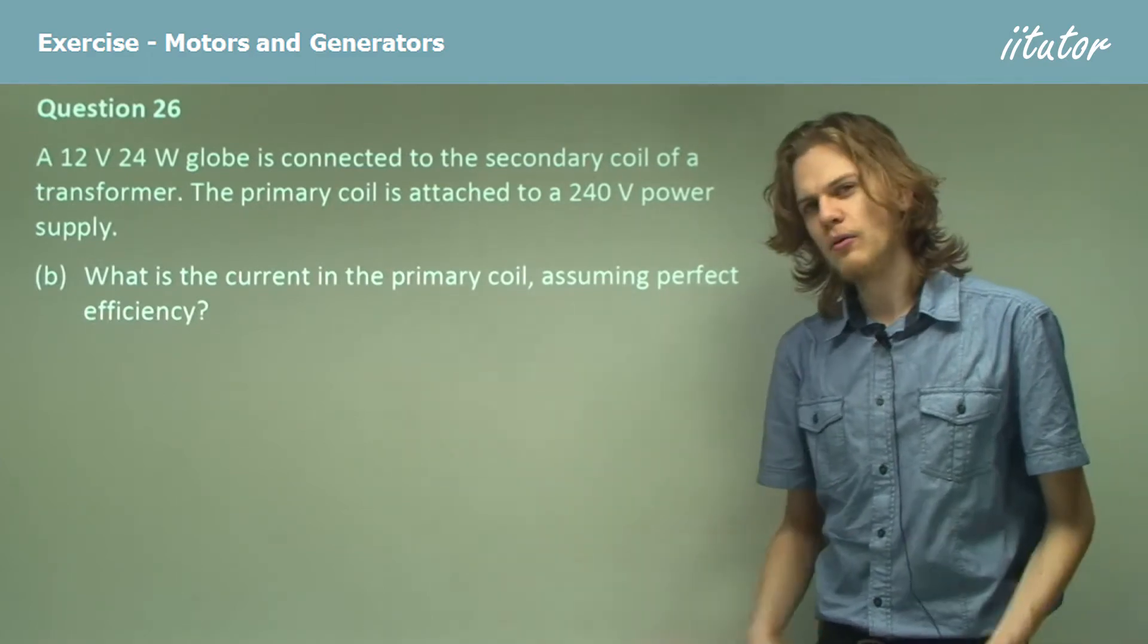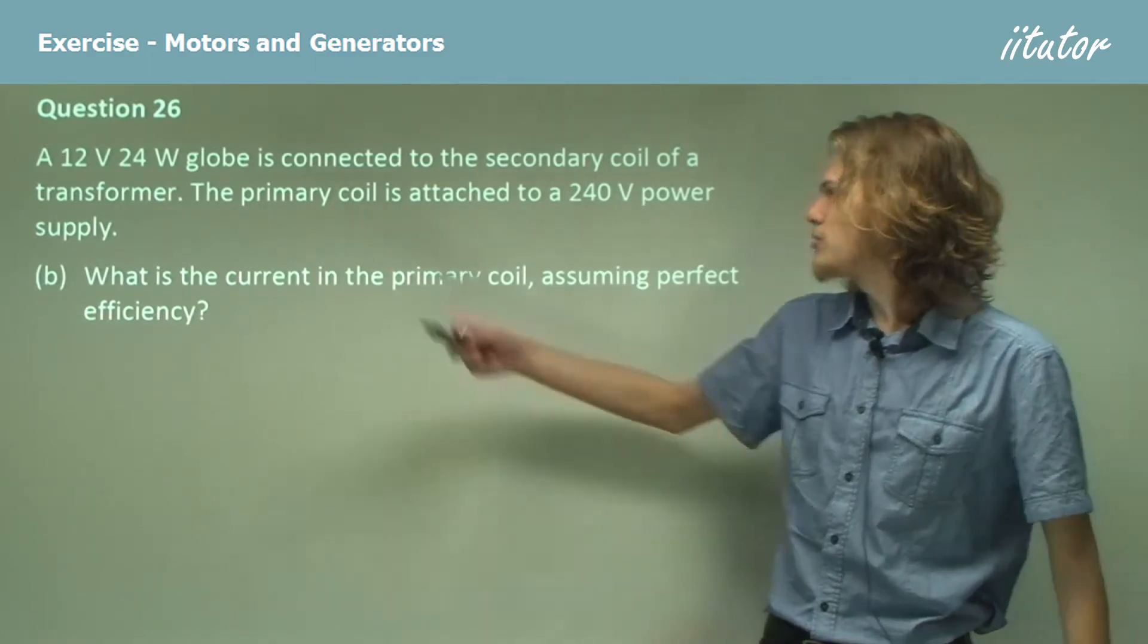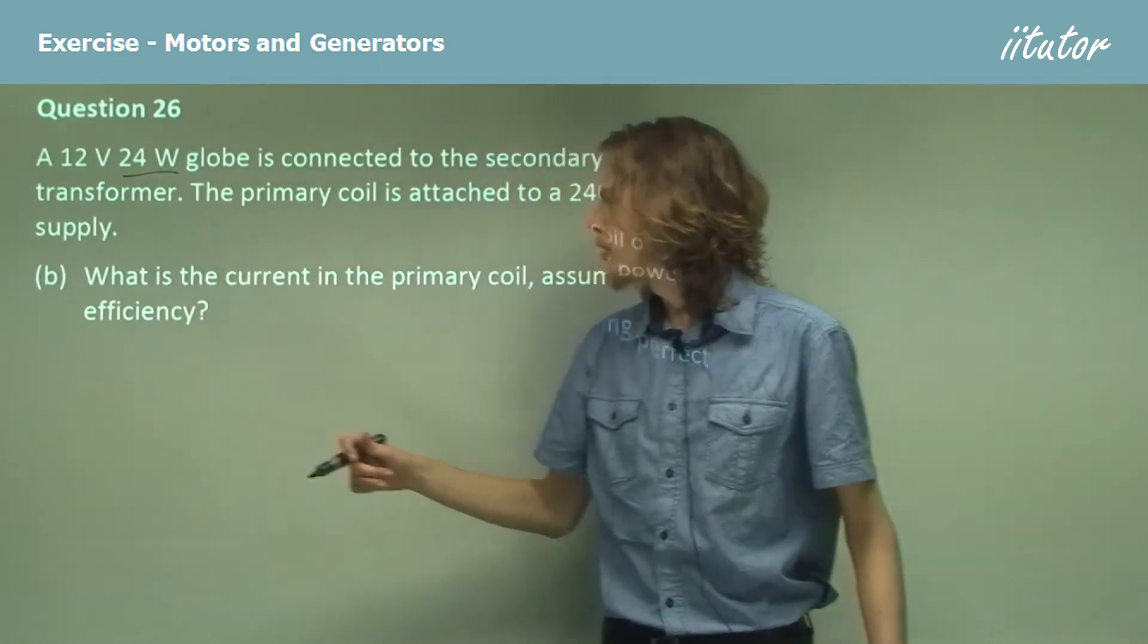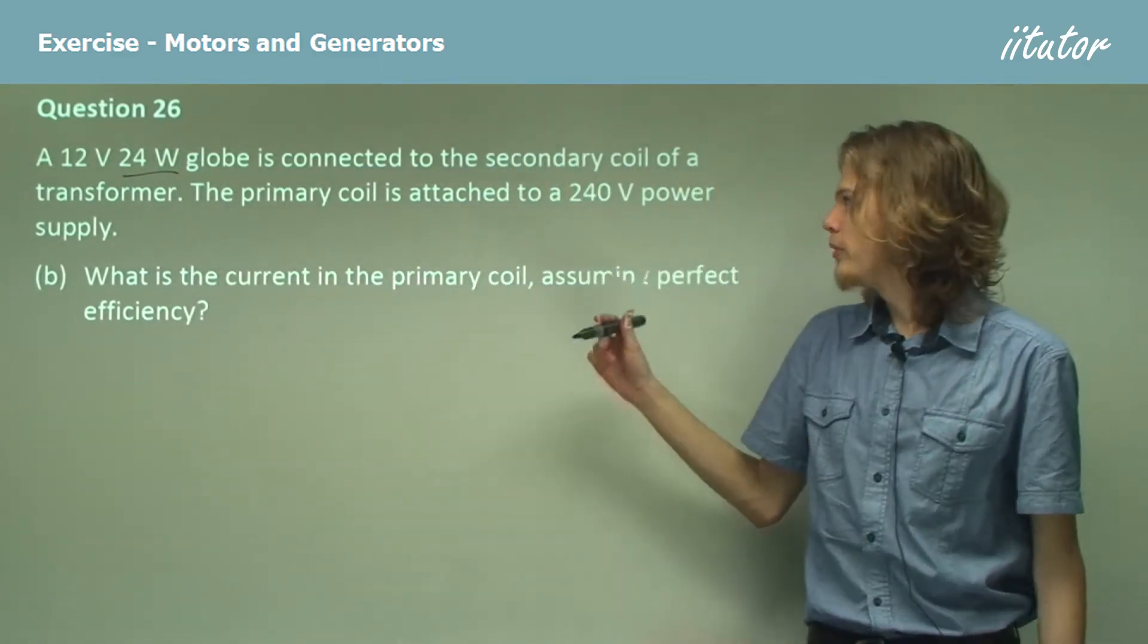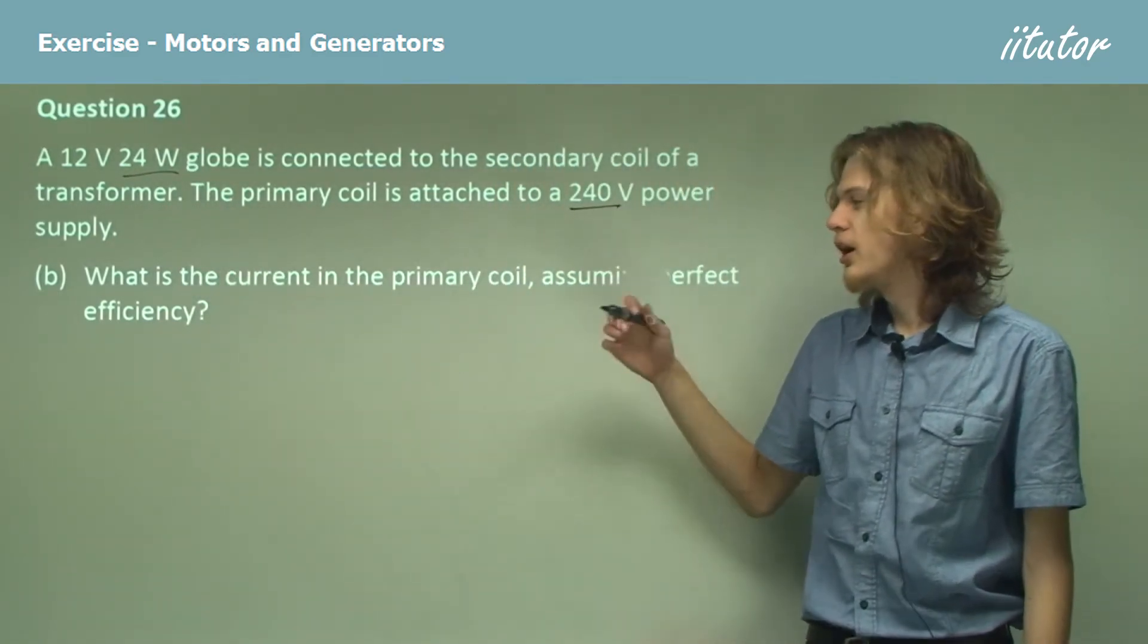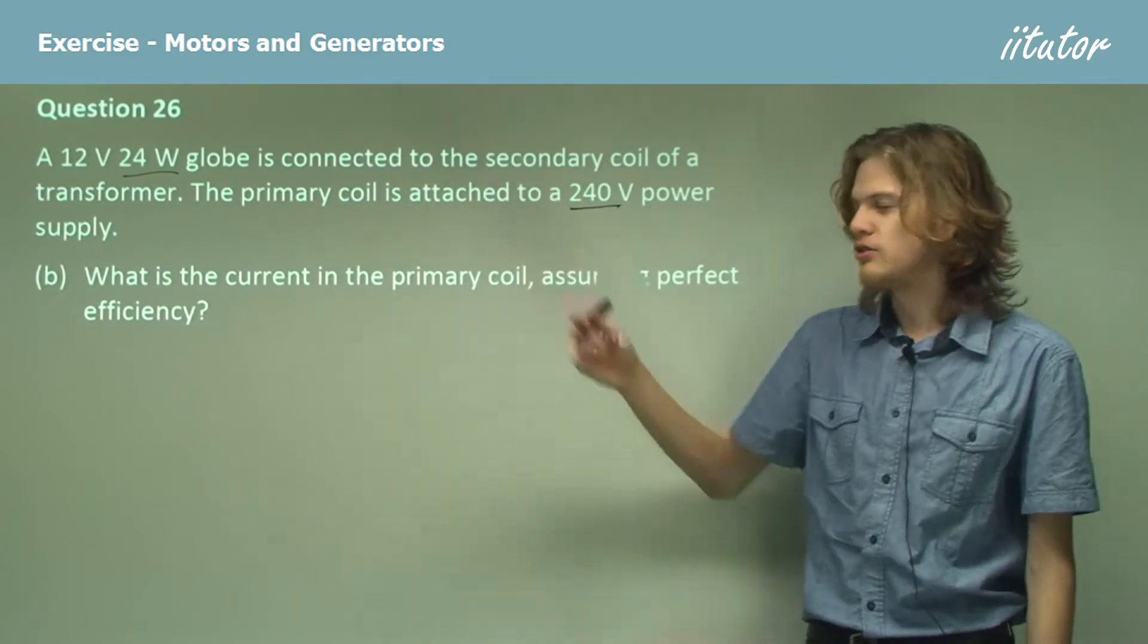So, what's our power of the transformer? Well, it's going to be 24 watts. The primary coil will be attached to 240 volts. The secondary coil will be attached to 12 volts.